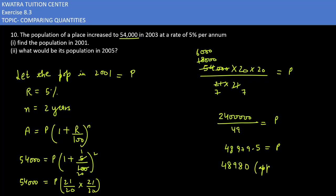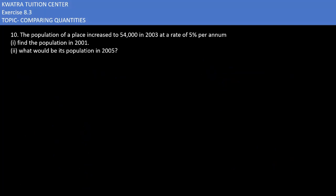This would be the principal for the first one. Now for the second part, what would be its population in 2005? In 2003, the population is 54,000. The principle should be understood, and in the next step, what will happen in two years?